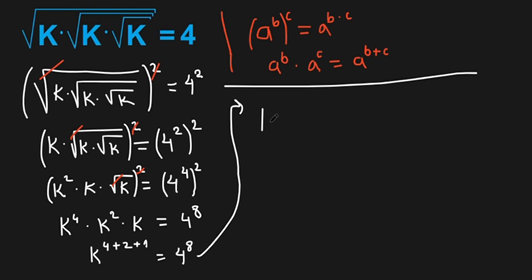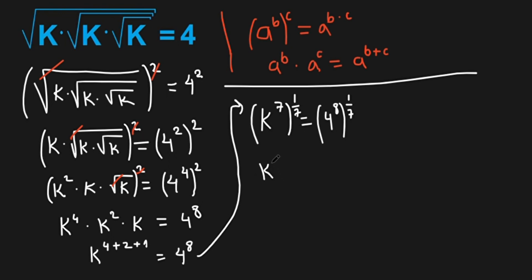So what do we have now? k to the power of 7 equals 4 to the power of 8. Now, I'm going to raise both sides by 1 over 7. And we have k to the power of 7 times 1 over 7, equals 4 to the power of 8 times 1 over 7. Let's eliminate here, and we have k equals 4 to the power of 8 over 7.